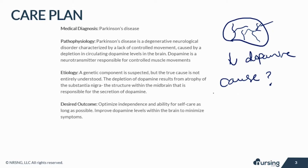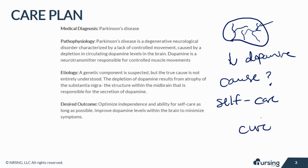The desired outcome is to optimize independence in the patient's ability to care for themselves for as long as possible. We want to improve dopamine levels in the brain to minimize symptoms. Unfortunately, there is no cure for this disease.